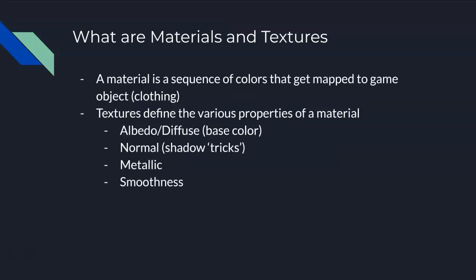So what are materials and textures? A material is really nothing more than a sequence of colors that get mapped to a game object. Think of it like the clothing on the model — the color, the texture, the roughness, how wavy it is. Textures define the various properties of a material, and the material controls what you can manipulate with those textures. For example, one texture property is called albedo or diffuse, which is the base color. Plaid, for example, is a base color — it's multiple colors like crisscrosses.